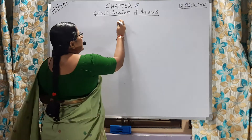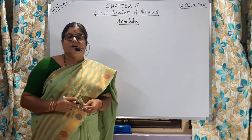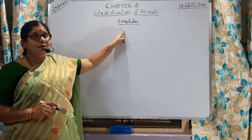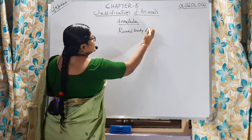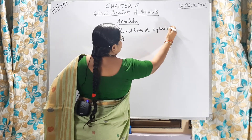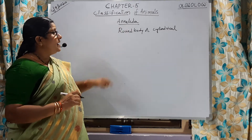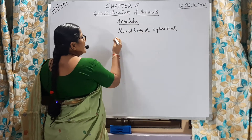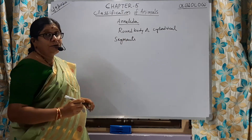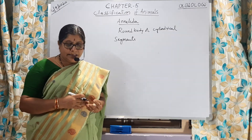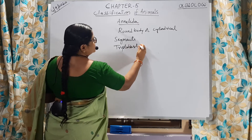Now we will discuss the characteristics of Annelida. The special character we observe in Annelida is a cylindrical body — a cylindrical curve, as we call it. Have you seen earthworms? Earthworms also belong to Annelida. They have a round, cylindrical body, and that cylinder has segments — each ring is a segment. They are also multicellular, triploblastic organisms with bilateral symmetry.